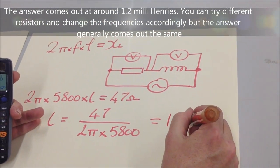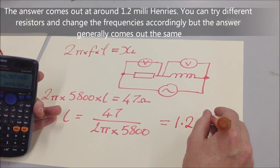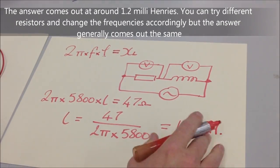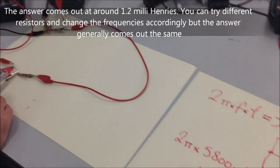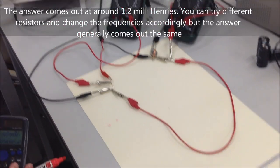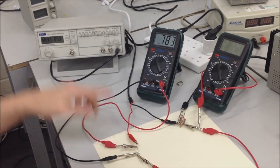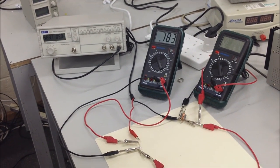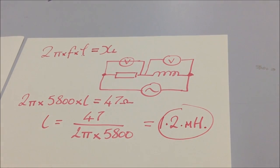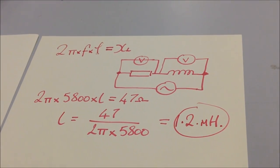Now to confirm that, you can change different resistors. So you can use different resistances and you'll have to adjust the frequency up and down. But you do it with three or four different resistances, the same calculation. It will confirm that the inductance of that motor coil is around about 1 to 1.2 millihenries.